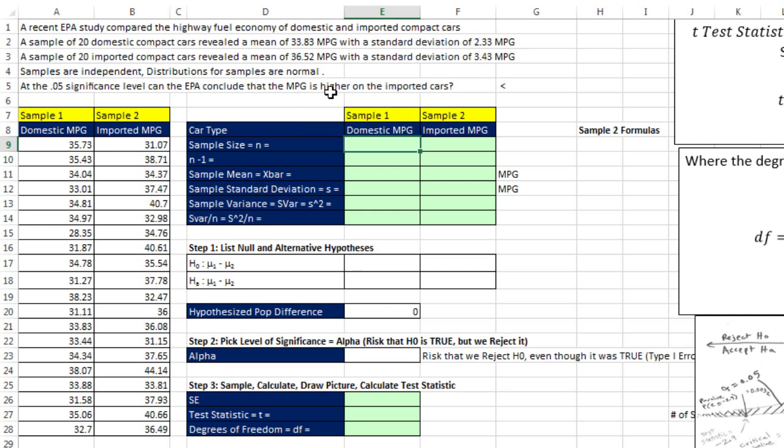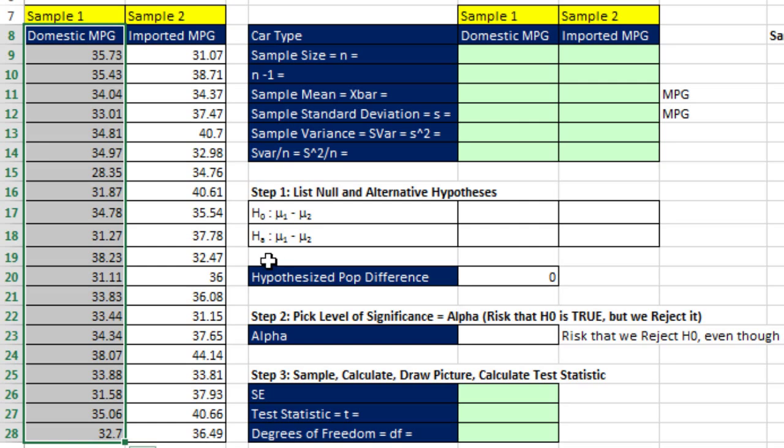We're going to take this statement. Remember, we first set up the alternative hypothesis, then the null hypothesis, then pick our alpha. So if we're looking at this, can the EPA conclude that miles per gallon are higher on the imported cars. We set this up as sample 2. So if we take the mean of this, we're assuming that the mean of sample 2 is going to be bigger than the mean of sample 1. So when we look at our alternative, oftentimes it's easier to set up the alternative hypothesis first.